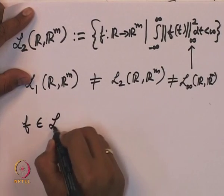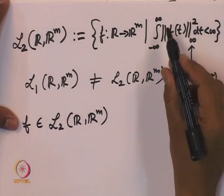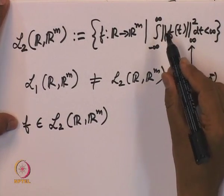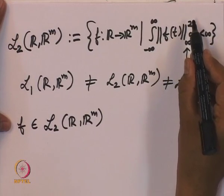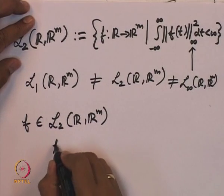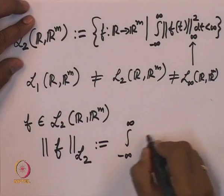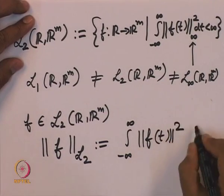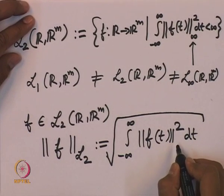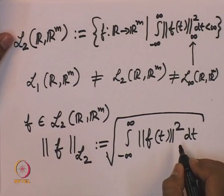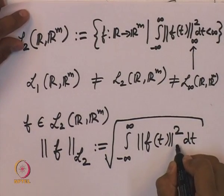For any f in Lp (with p ≥ 1, p finite), we define the Lp norm as the p-th root of the integral from minus infinity to infinity of the norm of f(t) raised to the p-th power dt. If f is in Lp we already know this integral is finite, and after taking the 1/p-th root we get the Lp norm of f. For this course we will stick to the two-norm in R^m.